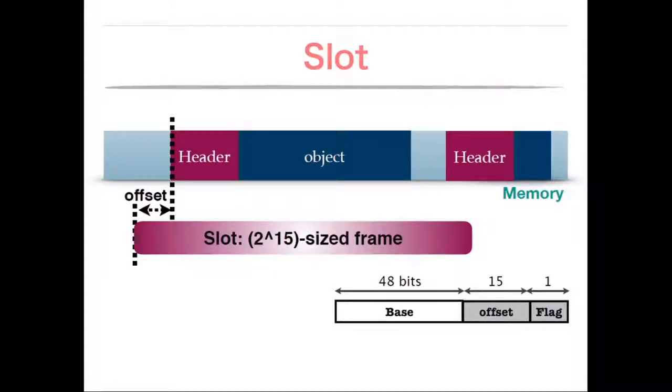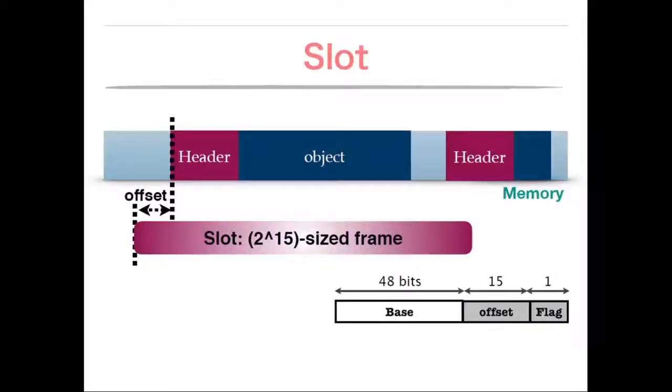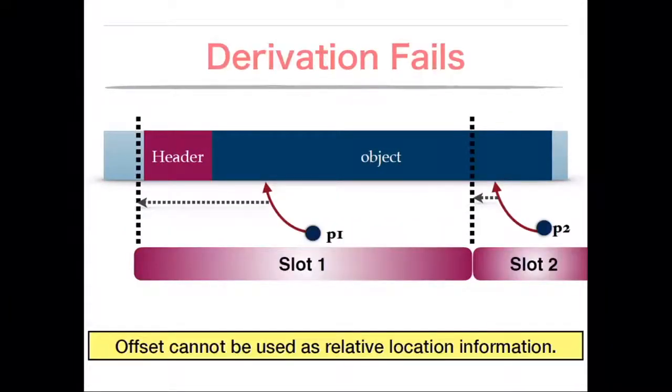To make the size of offset fixed, we introduce a slot. Slot is defined as a 2 to 15 size frame. We set the size of slot to 2 to 15 so that the offset can fit in the spare bits. One bit is taken for other purpose, I'm going to explain later.